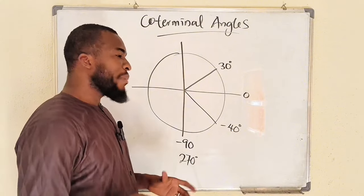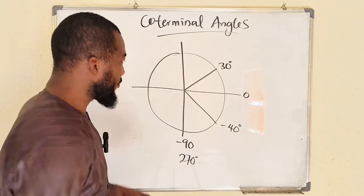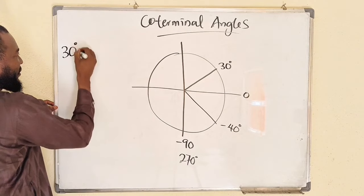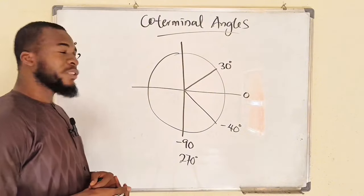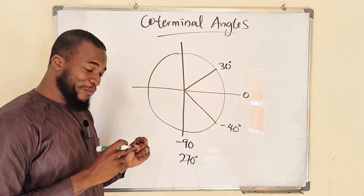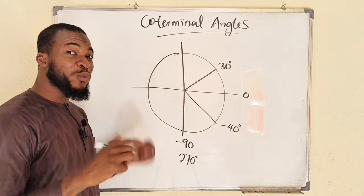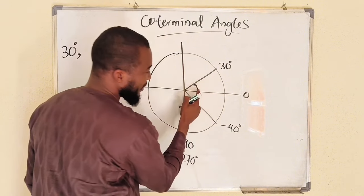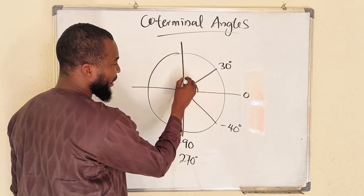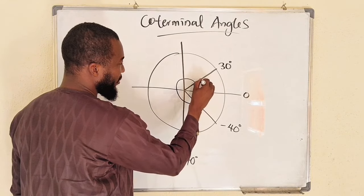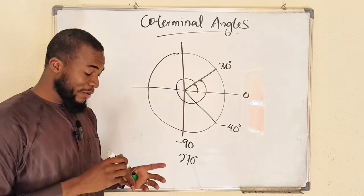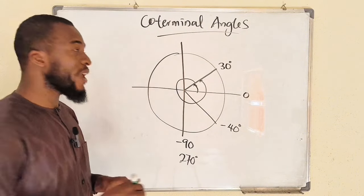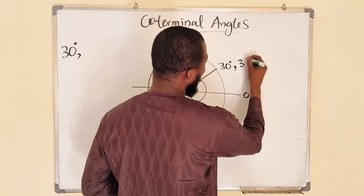Coterminal angles can be obtained by adding or subtracting 360 degrees. For example, if I have 30 degrees, to obtain a coterminal angle — if I move from here around to make a complete rotation, I'm going to have an additional 360 degrees on top of 30, which gives us 390. So 30 degrees and 390 degrees are coterminal.